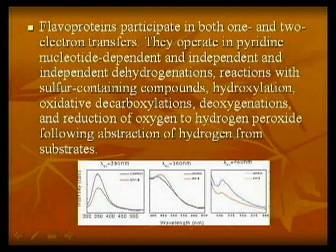Flavocoenzymes participate in both one- and two-electron transfer reactions. They operate in nicotinate nucleotide-dependent and independent dehydrogenation reactions, with sulfur-containing substrates, in oxidation-oxygenation reactions, and in production of hydrogen peroxide followed by reduction of oxygen from substrates.